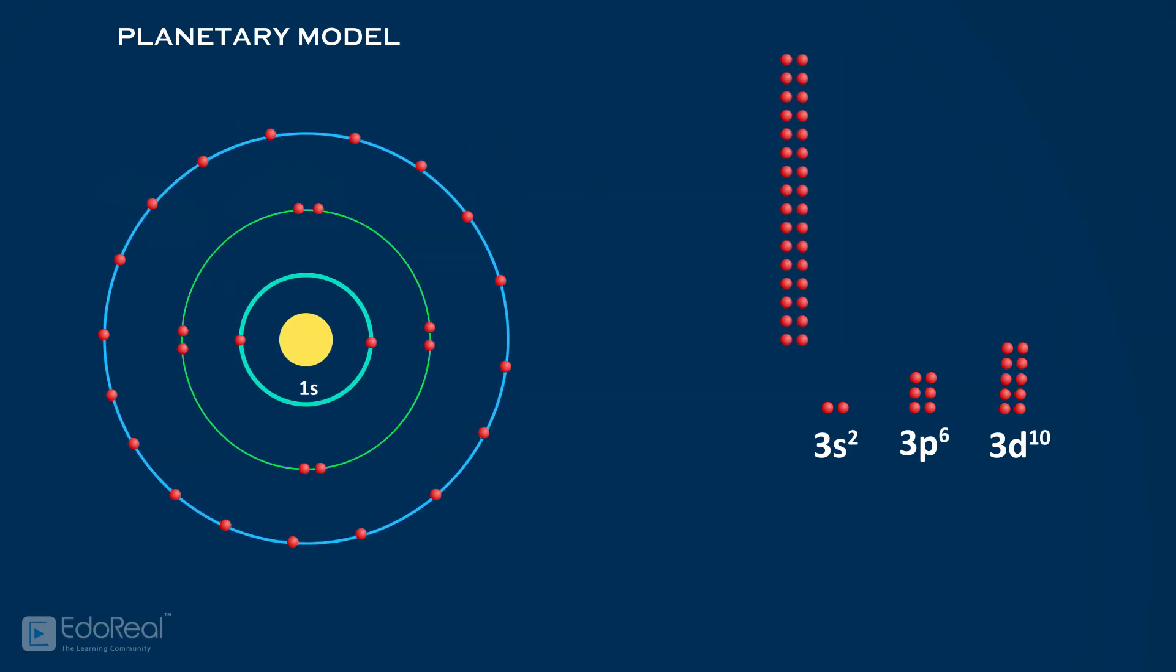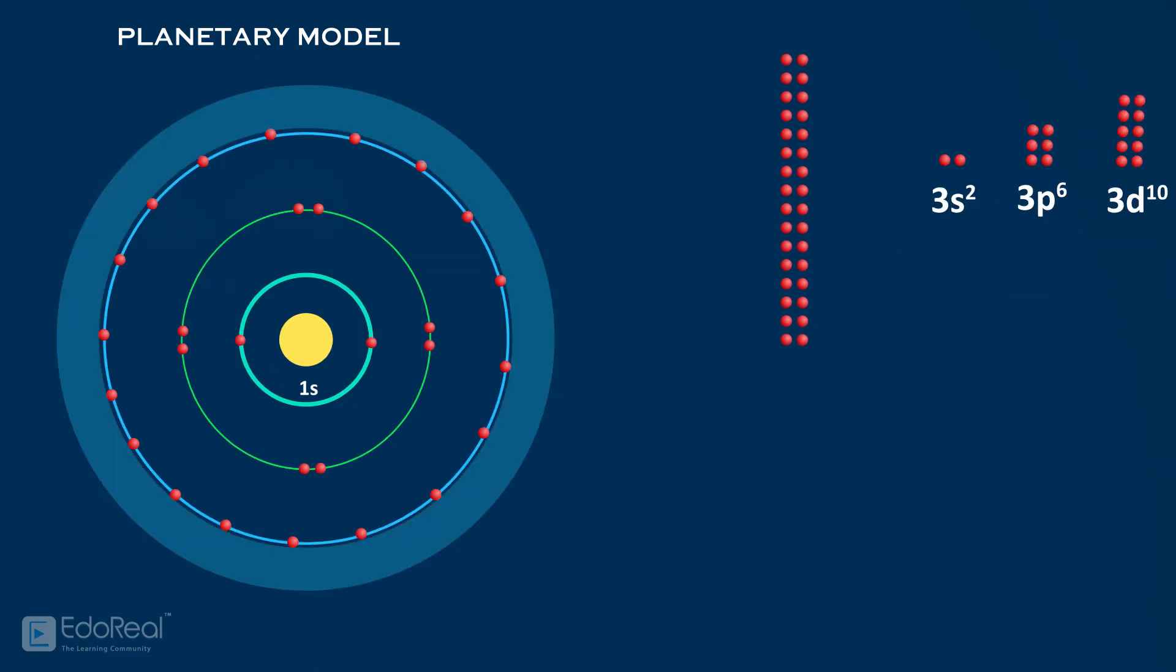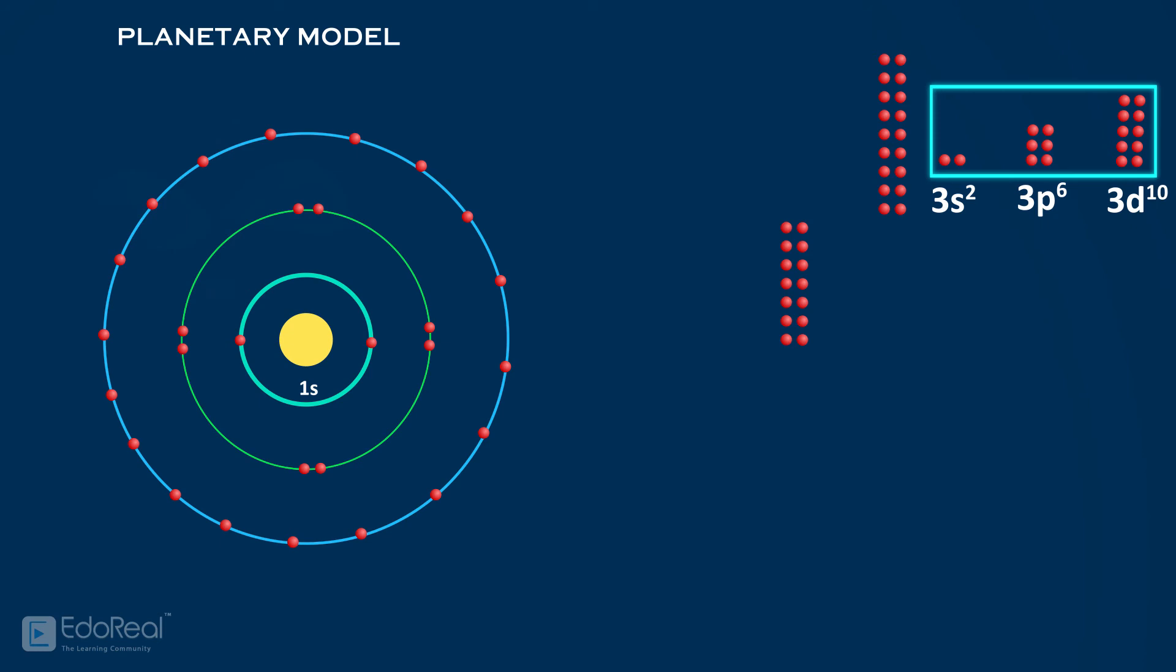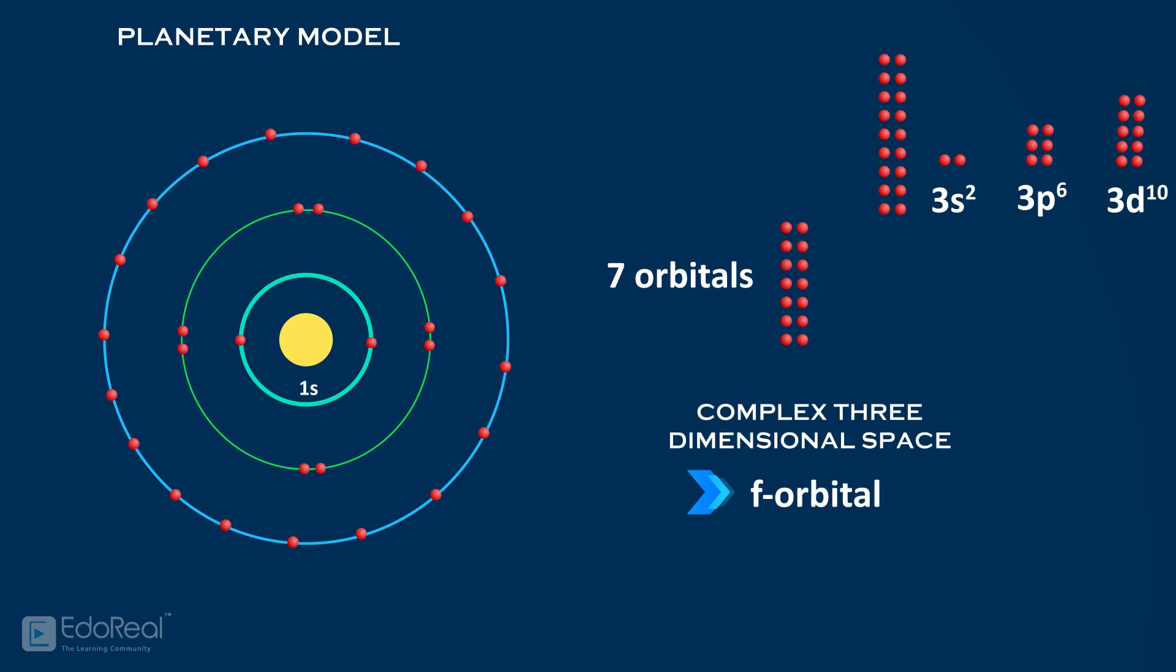The next 32 electrons cover a huge space than the earlier electrons. First 18 electrons out of 32 have the similar shape of 3s2, 3p6, 3d10. The remaining 14 electrons probably found in 7 orbitals covering different 3-dimensional space. This entire space is called as f orbital.